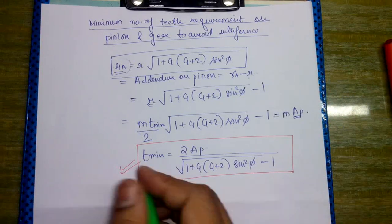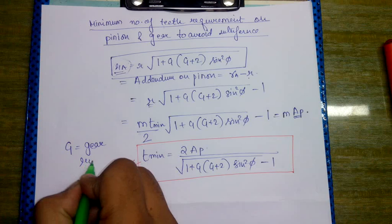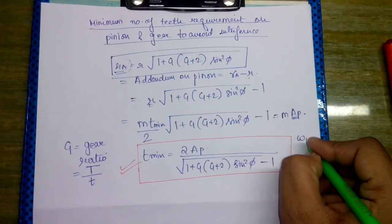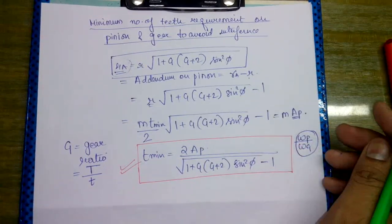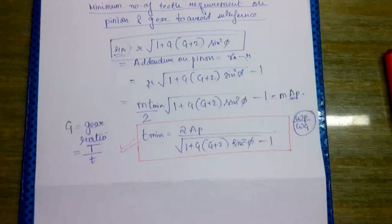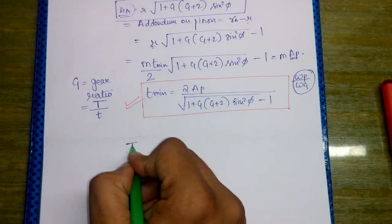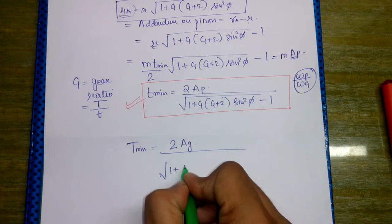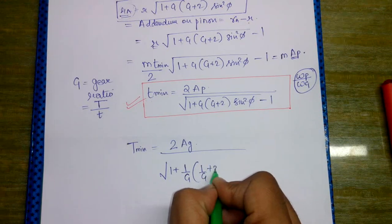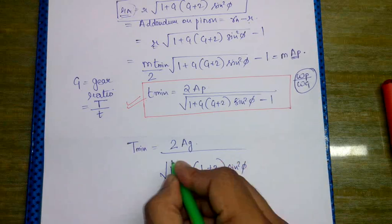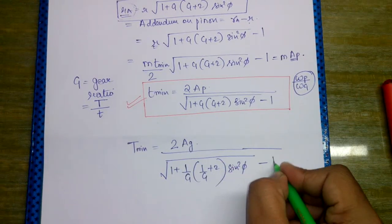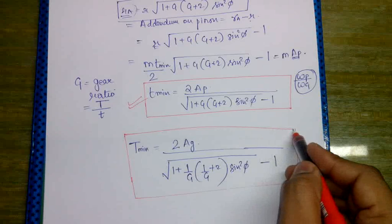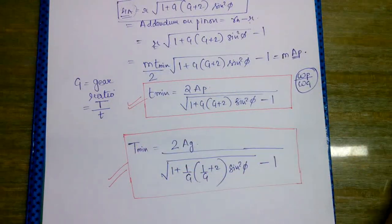This is the formula for the minimum number of teeth required on the pinion to avoid interference. G is the gear ratio, defined as the number of teeth on the gear divided by the number of teeth on the pinion, or equivalently omega of the pinion divided by omega of the gear. Similarly, the minimum number of teeth on the gear is: T minimum equals 2 times the fractional addendum of the gear divided by the corresponding expression.